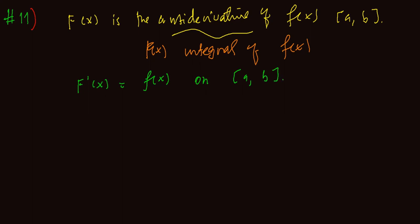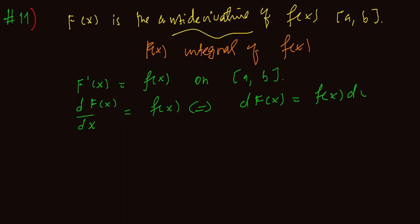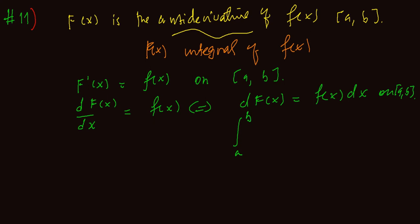Because F is continuous, it is integrable. Therefore, the derivative of capital F of x in terms of the independent variable dx is equal to f of x dx on the closed interval from A to B. So when you take the antiderivative, the integral on A to B of d capital F of x is equal to the antiderivative of the right side from A to B, which is f of x dx.